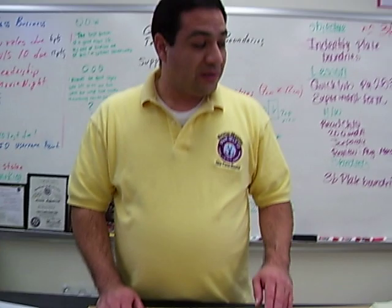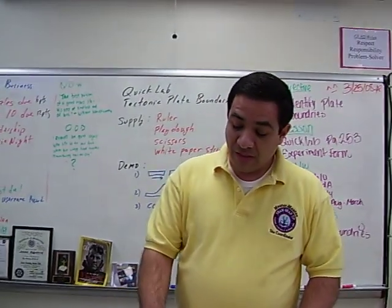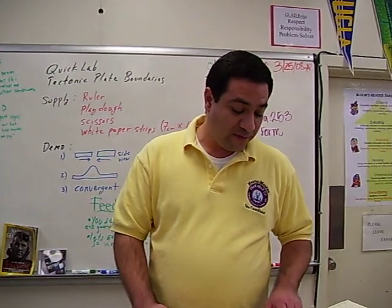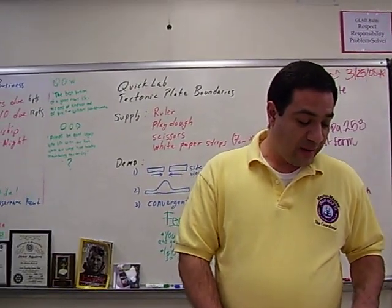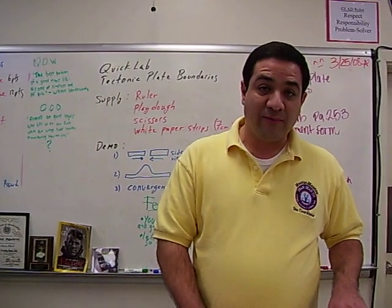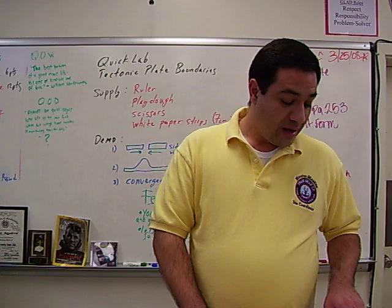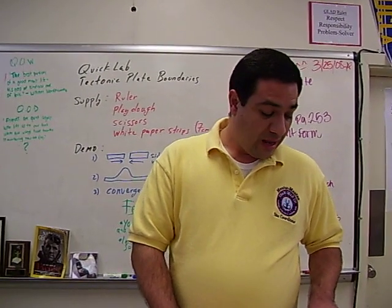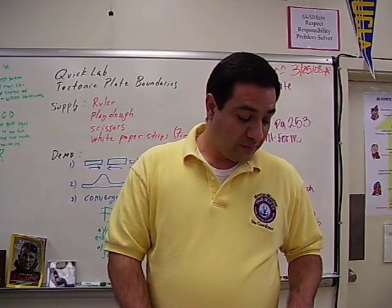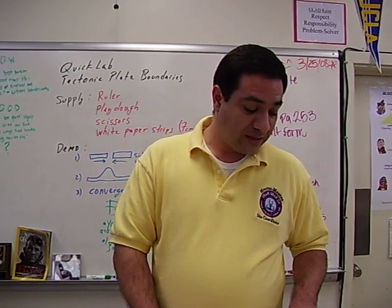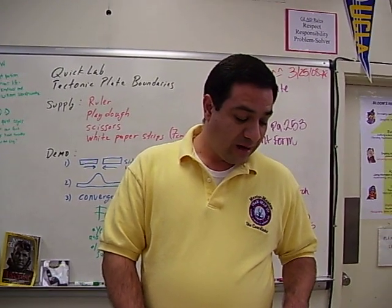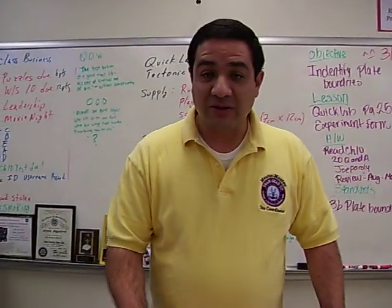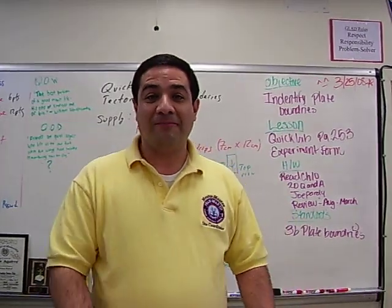That basically concludes the lab. In the textbook on page 253, it asks you: what type of plate boundaries are you modeling in step five? What type of plate boundaries are you modeling in step seven? And how do you think the process modeled in these activities might affect the appearance of the Earth's surface? That's Mr. Geary signing off from MySciences.com. Thank you.